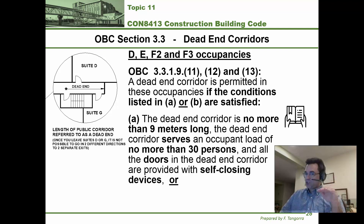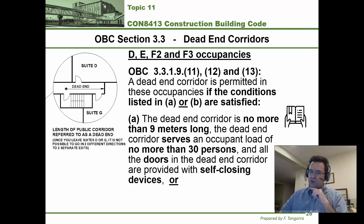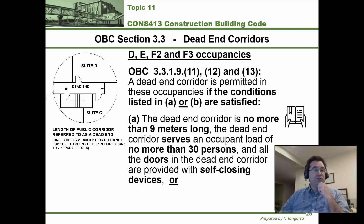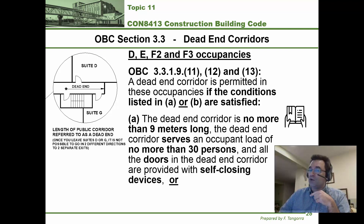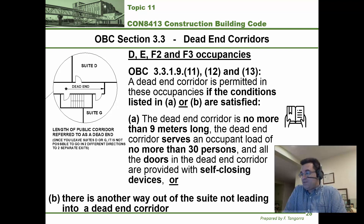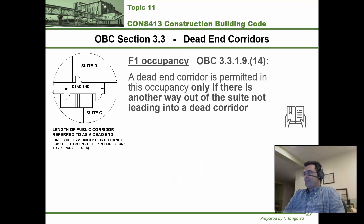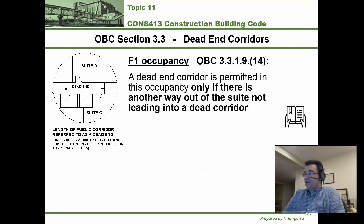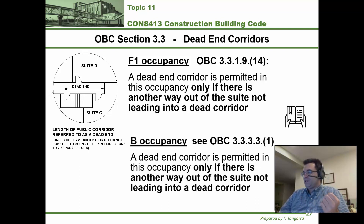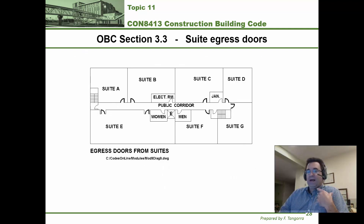For D, E, F2, and F3 occupancies, there are a number of conditions that must be met in order for dead-end corridors to be allowed. They're written in your course notes, but you must read them in the building code to make sure you're referencing the most current version, since this video and lecture notes may not be up to date if the building code changes. For F1 and B occupancies, a dead-end corridor is allowed if there is another way out of the suite that does not lead into a dead-end corridor.